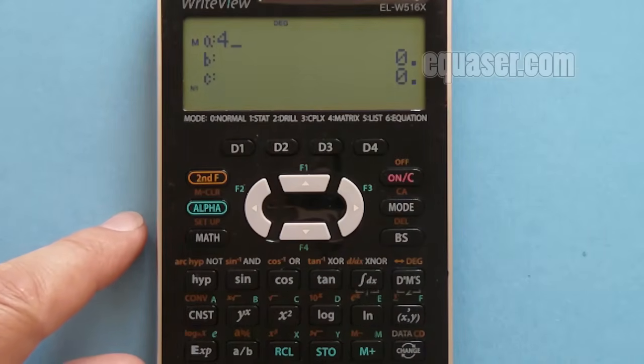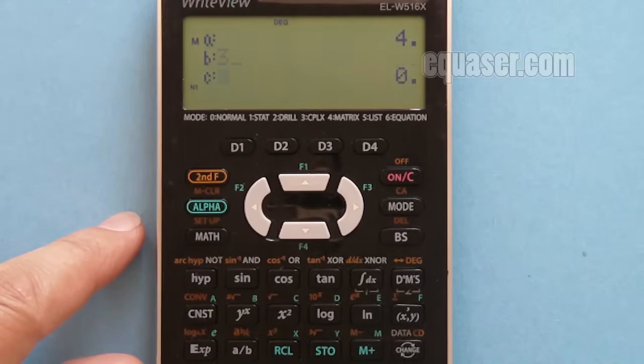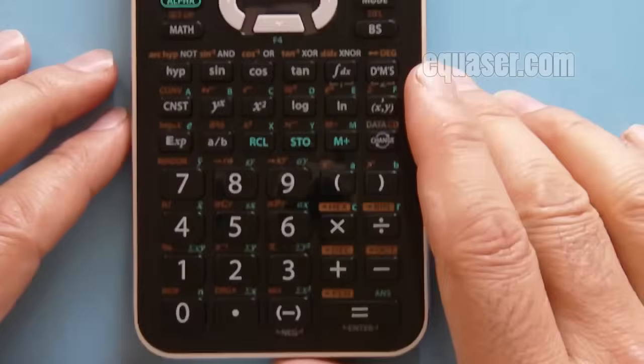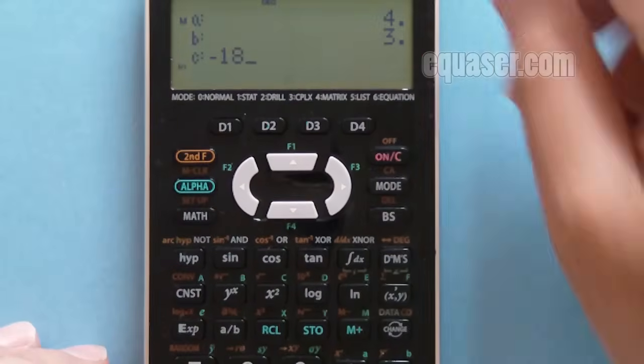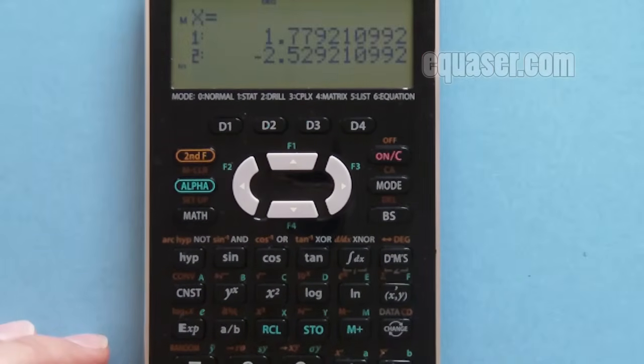Now I'm being asked to enter a value for A, which is 4. I press 4 and then the equal sign. For B, it's 3. I press the equal sign. For C, negative 18. I pressed this negative sign on the left side, not this one, negative and then equal sign.